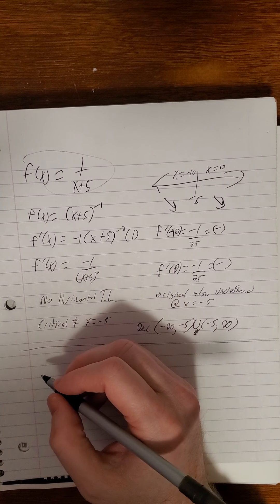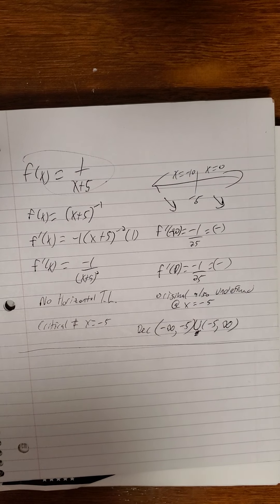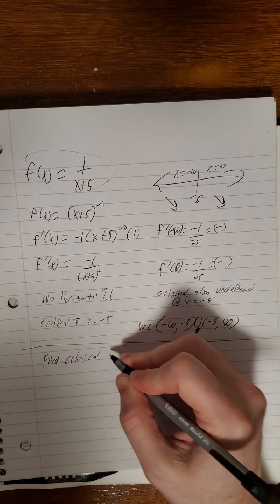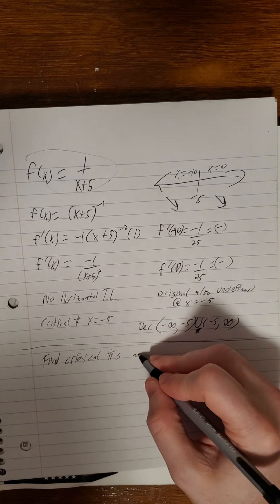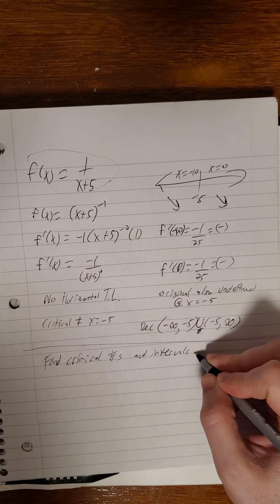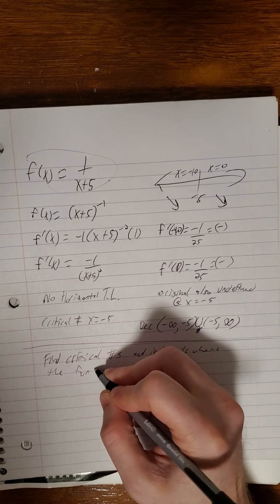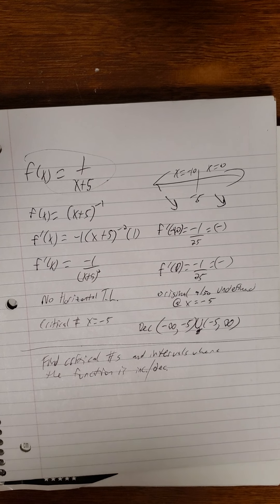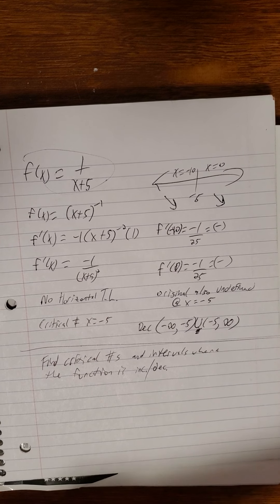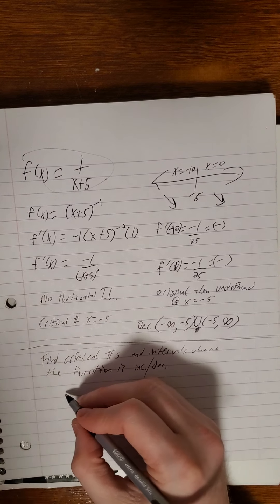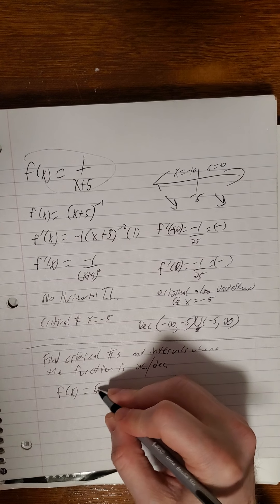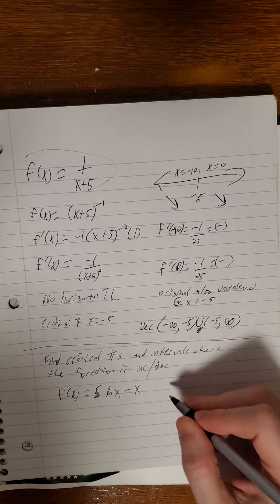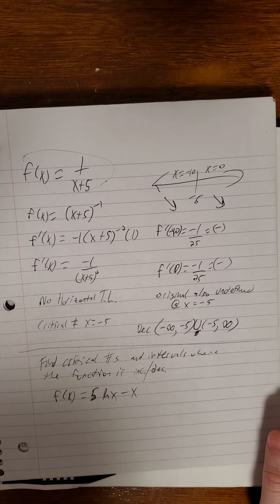All right, let's have you all try one out. So you're going to find some critical numbers and intervals where the function is either increasing or decreasing. And we'll use one of your authors. So f of x, 5, and it's an ugly 5, 5 nonetheless, 5 natural log of x minus x. So go ahead and pause it, see if you can find those critical numbers.